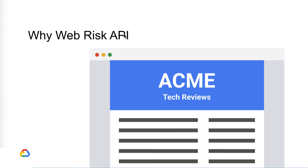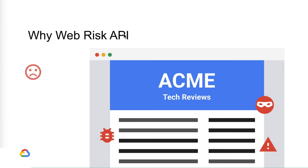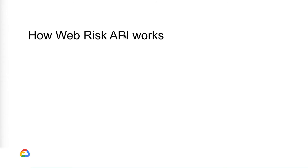Let's say there's a company called Acme Tech Reviews, a site for local tech events like RSA. Users can post all kinds of content, which is great and attracts more users too. But as Acme grows, this also attracts attackers trying to compromise Acme's users. Bad content creates security issues for the site and its users, driving those users away. Attackers exploit Acme reviews by posting unsafe links via an event submission feature.